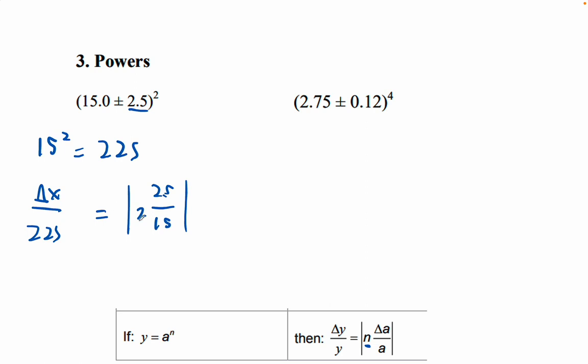Okay, the reason it's an absolute value is that sometimes exponents are negative. Like so 1 over X squared would be X to the negative 2 and it doesn't make sense to have a negative uncertainty. Actually, it doesn't matter because plus or minus a negative number is the same as plus or minus a positive number.